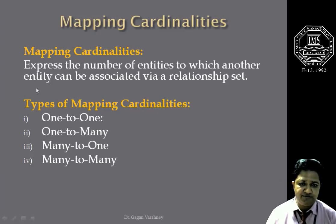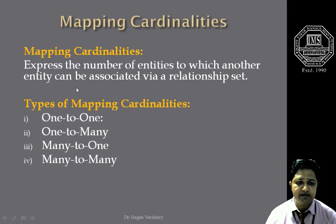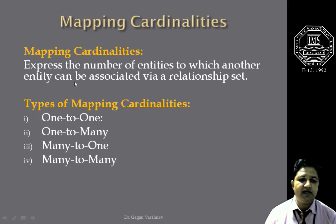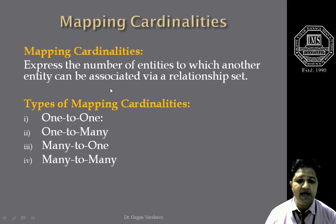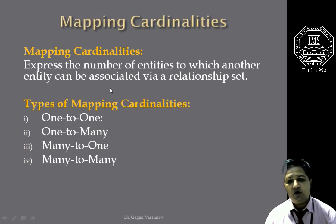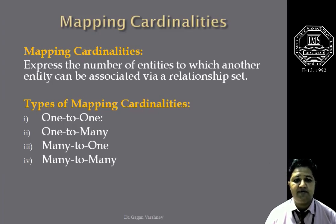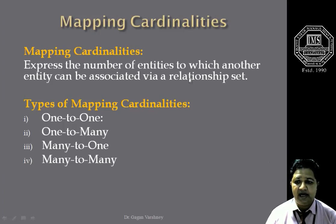So first of all, what are mapping cardinalities or constraints? Mapping cardinalities basically express the number of entities to which another entity can be associated or linked. It means how one entity of one entity set is associated with another entity of another entity set, and that is only possible with the help of a relationship set, which we have already discussed in a previous flipped class.